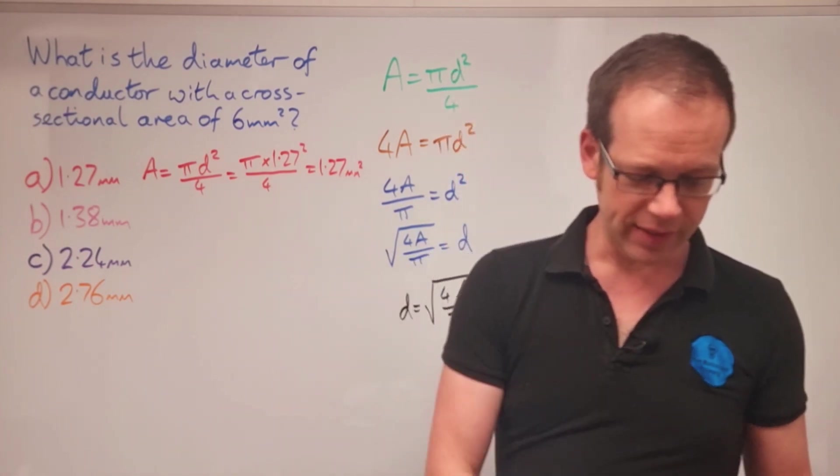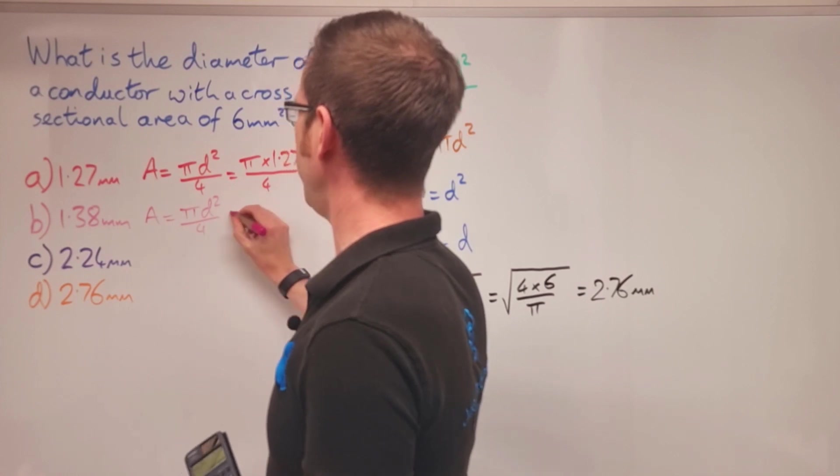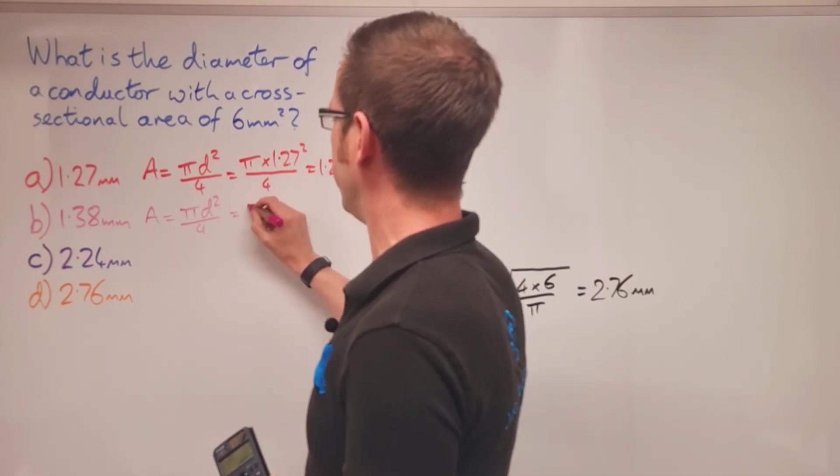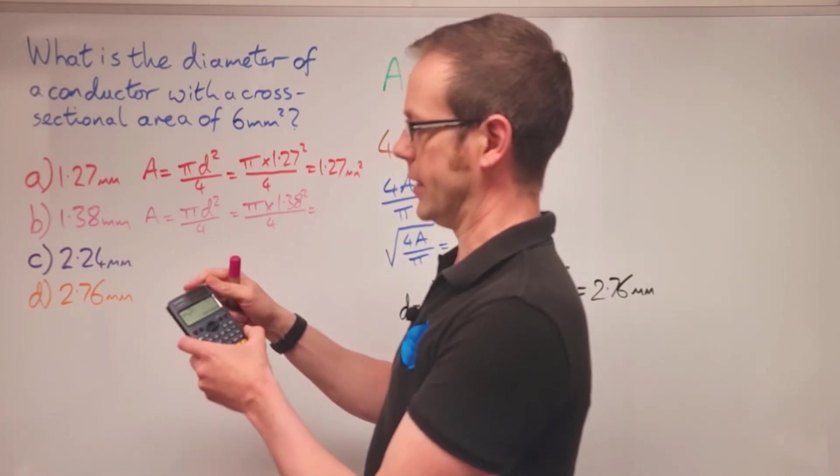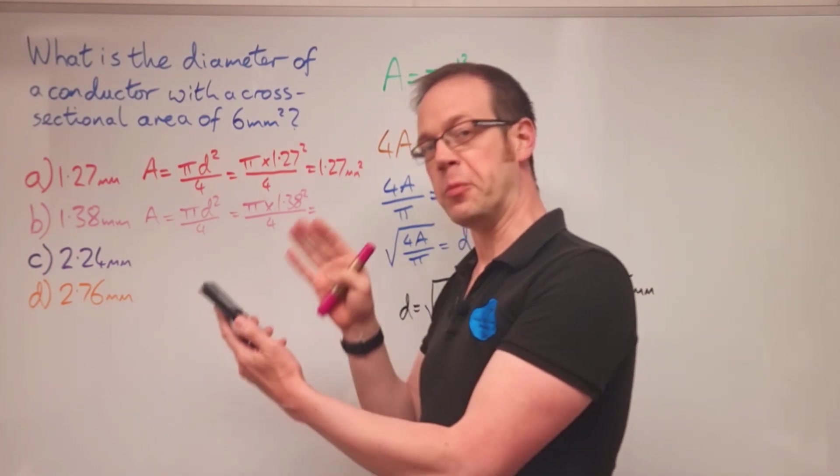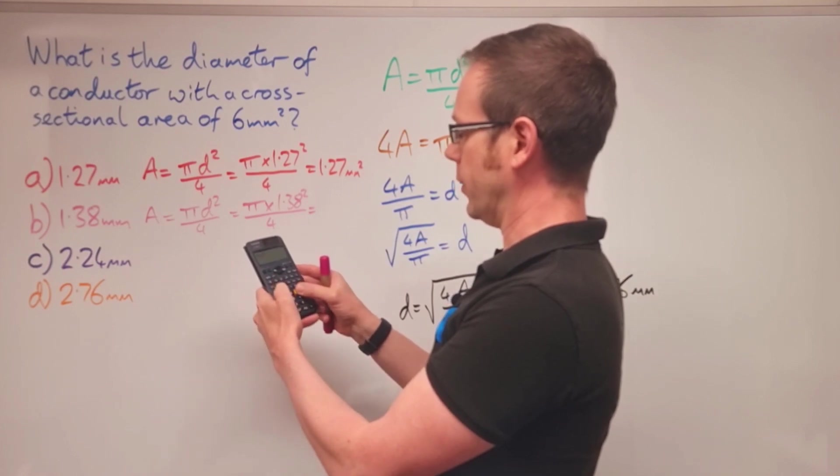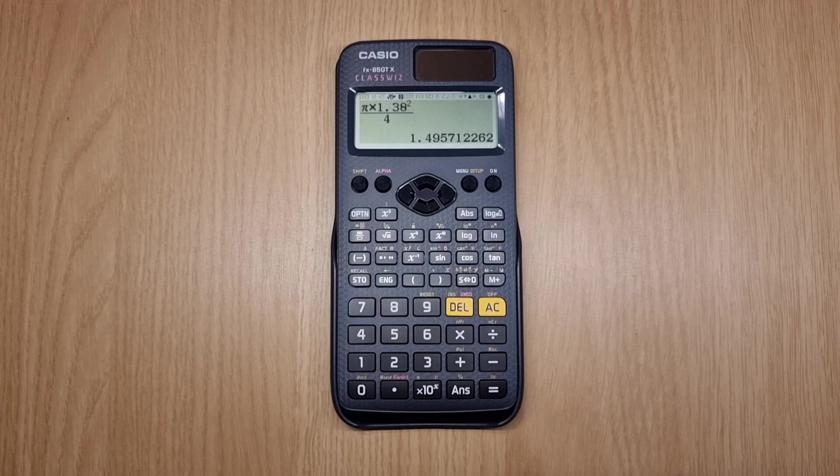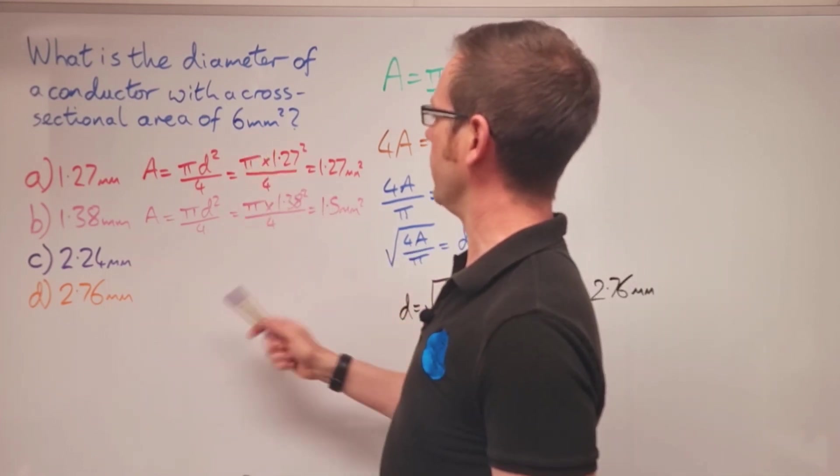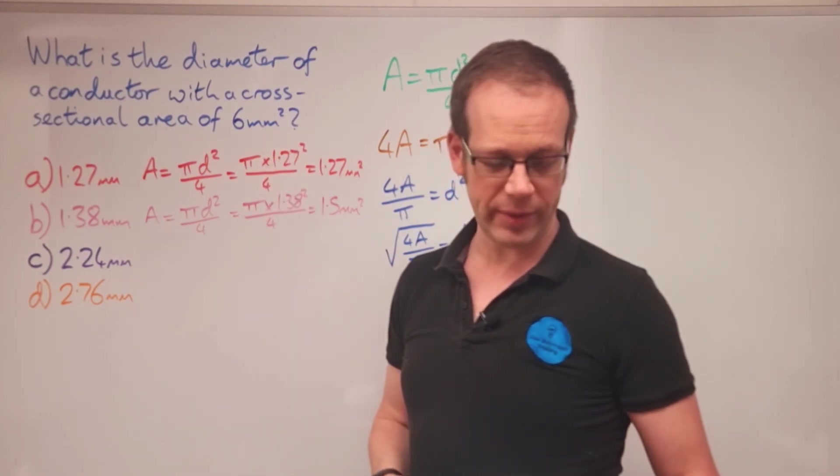We could then just work our way down the list. Same thing again: A equals pi d squared over four. The area equals pi times 1.38 squared over four. The nice thing about the Casio FX-85 GTX—I'm not promoted by these by the way, I just love it—is we can move the cursor around so we don't need to put the whole thing in again. That gives us 1.5 millimeters squared, a familiar conductor size to those of us in the electrical industry. Again, we can see that number is not six millimeters.